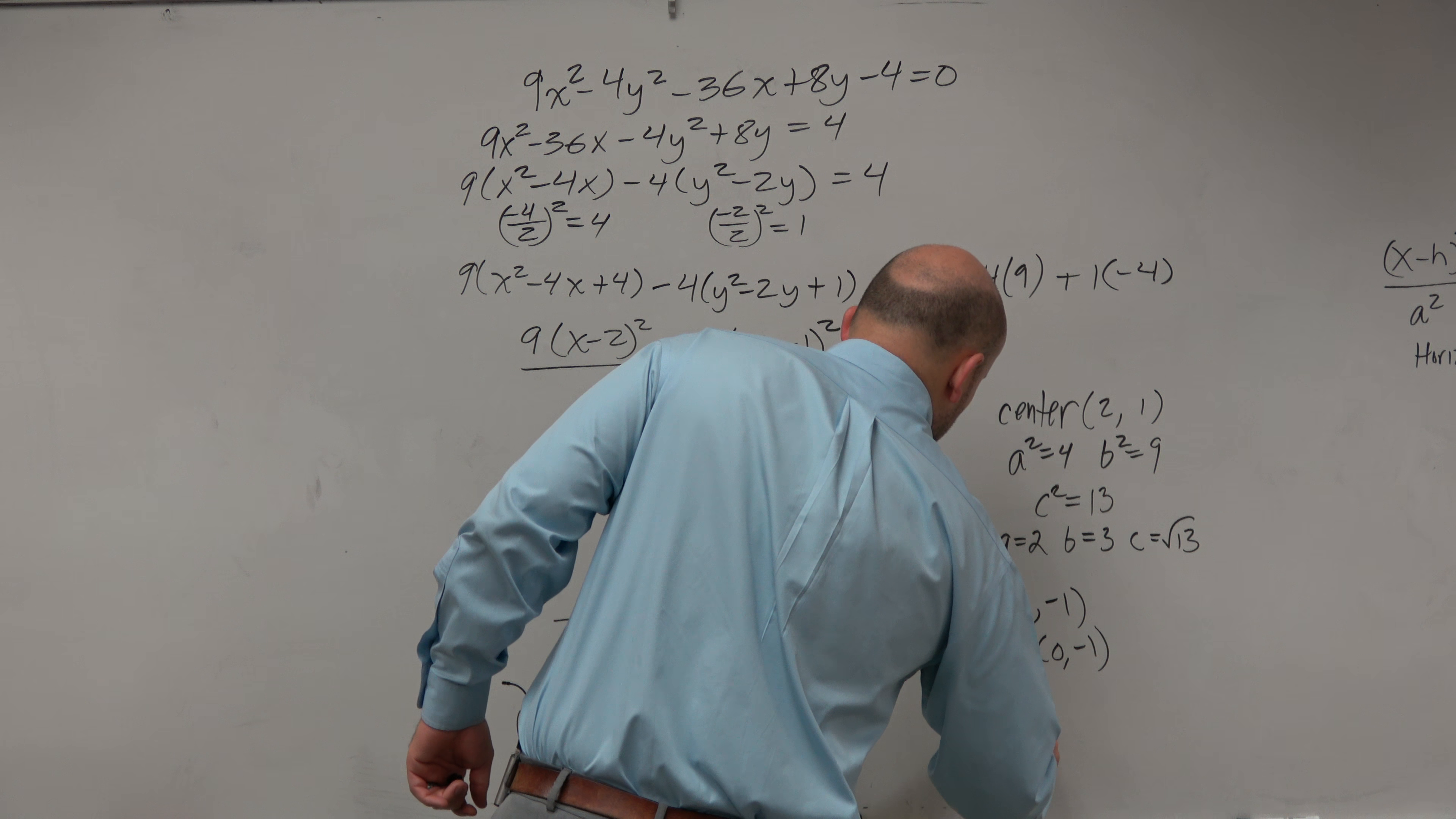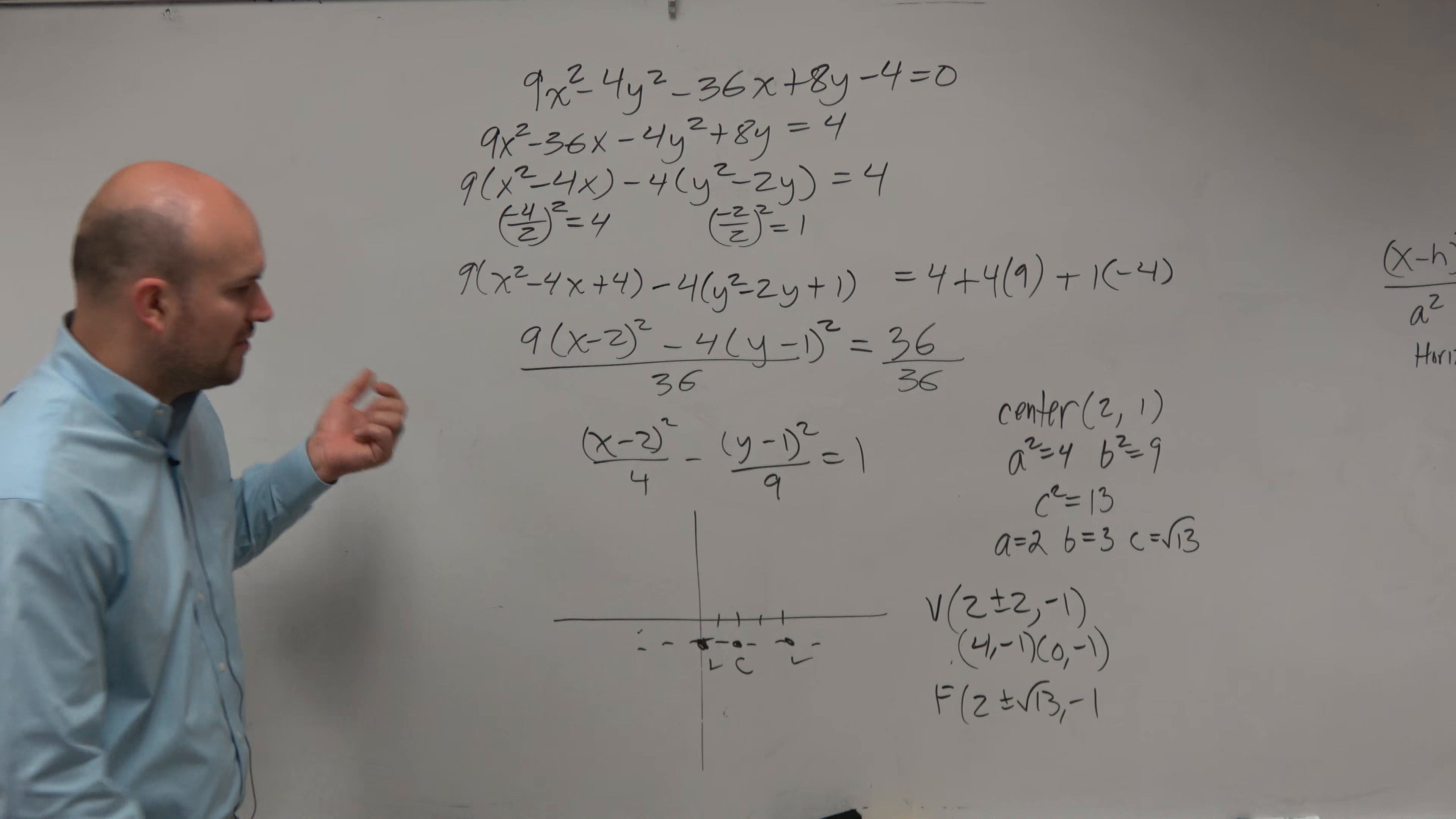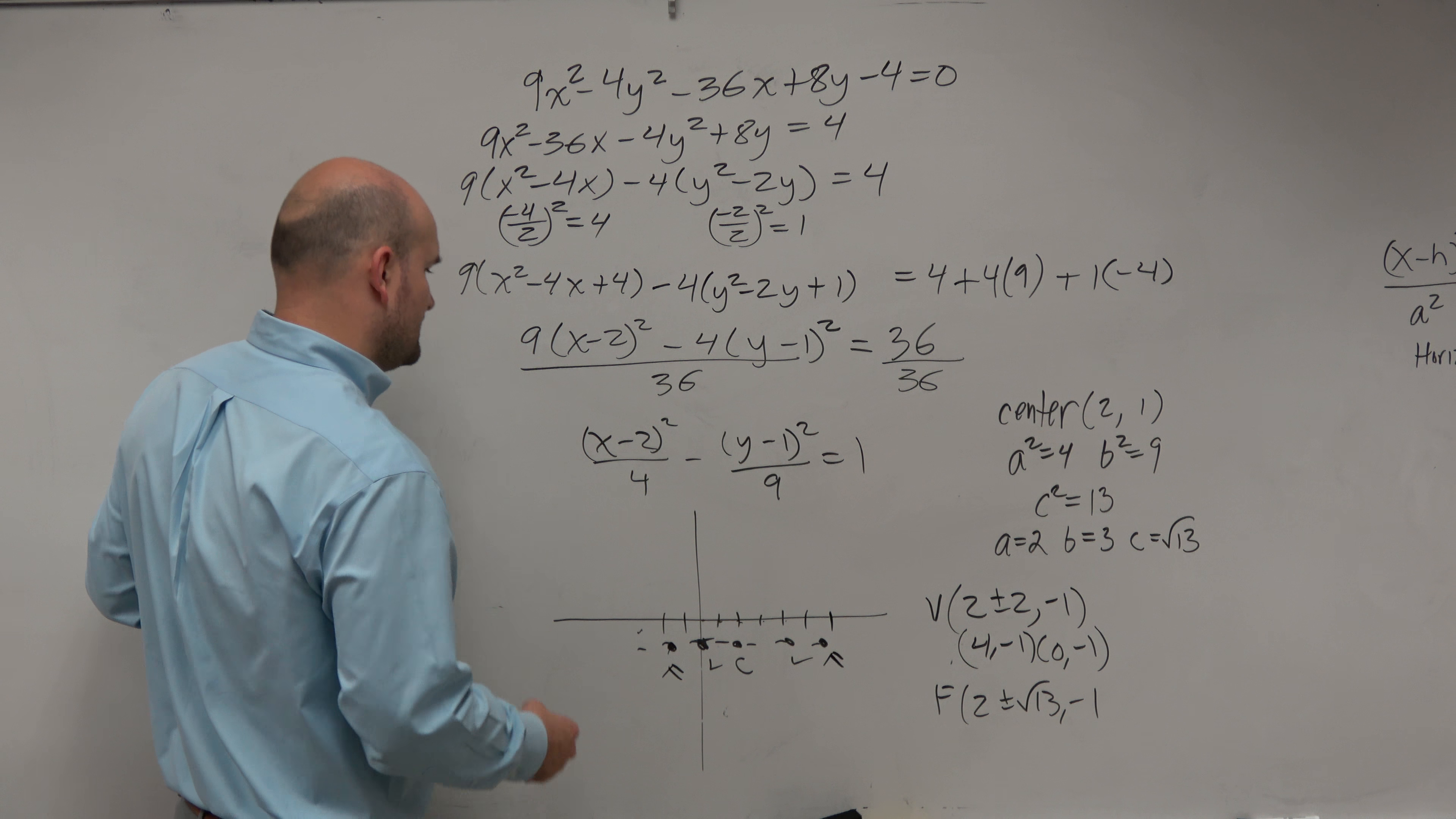Does that make sense? Right? And then obviously, you do that. So that means your 2 answers are going to be 4, negative 1 and 0, negative 1. Those are your 2 vertices. So 1, 2, 3, 4, negative 1, 0, negative 1. There's your 2 vertices.